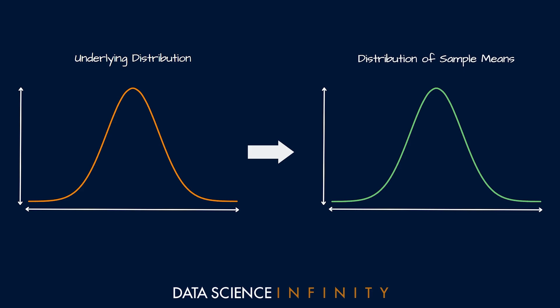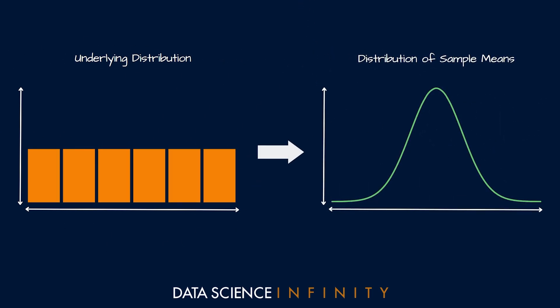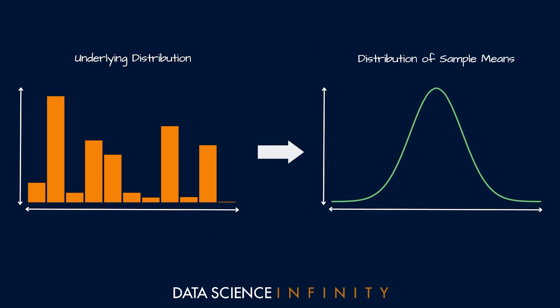Imagine if our underlying distribution wasn't normal at all — say it was a uniform distribution. If we take many samples from this uniform distribution and plot the means of each sample, it still tends towards normal. What about an unnamed asymmetrical distribution? The distribution of the sample means will still tend toward normal, provided we have an adequate number of samples. This logic holds for any underlying distribution, at least any distribution where we can calculate a mean.